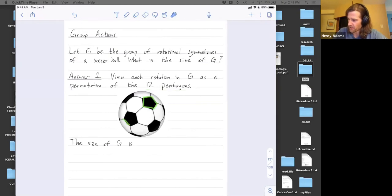So here are the 12 pentagons. In this view you can only see some of them, but there's 12 in total. And we're going to use the pentagons, the action of these rotations on the pentagons to count the number of rotational symmetries in total.